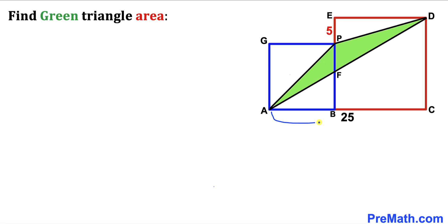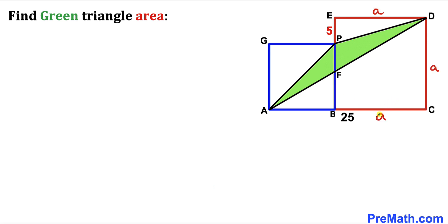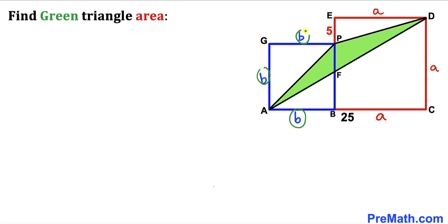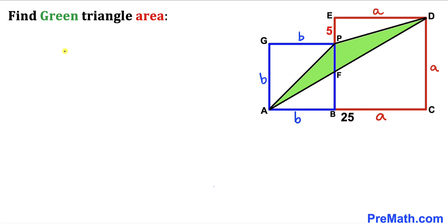Let's make an observation. We can see that side AC is 25. Let's assume that the side length of the red square is lowercase a, so all of its side lengths are a. Let's assume the side length of the blue square is lowercase b, so all of its side lengths are b. The whole length a plus b equals 25.